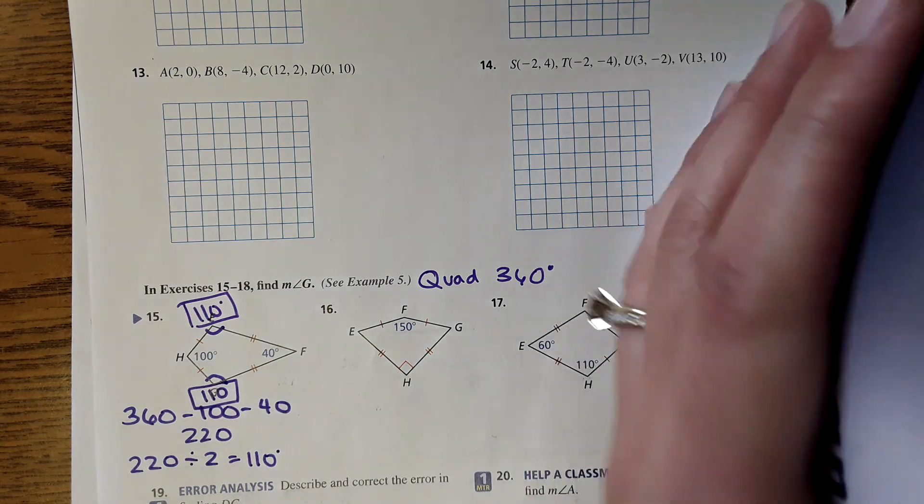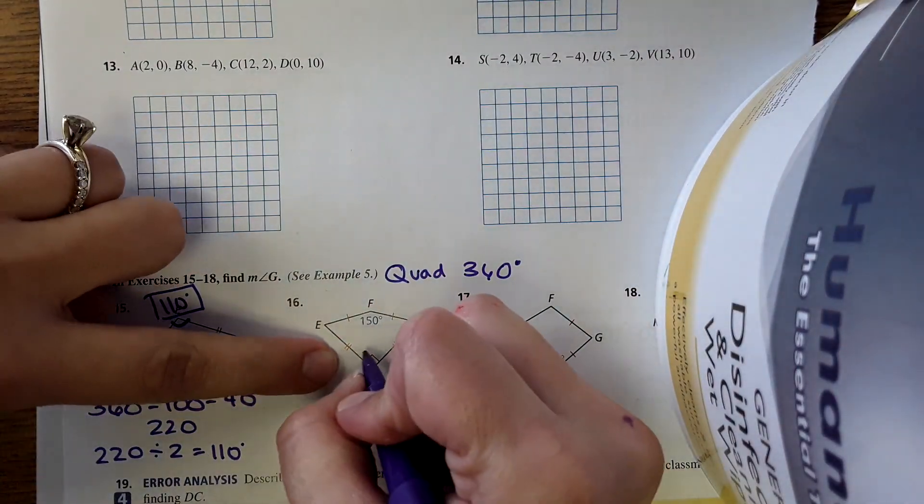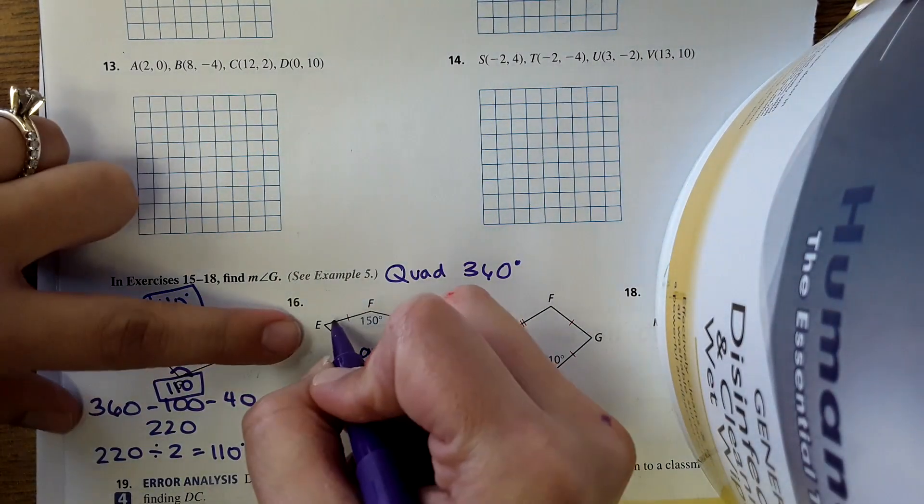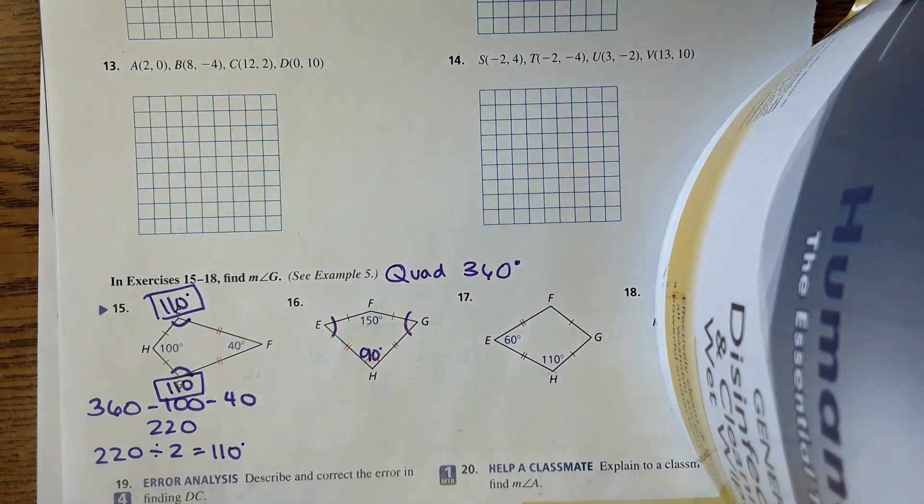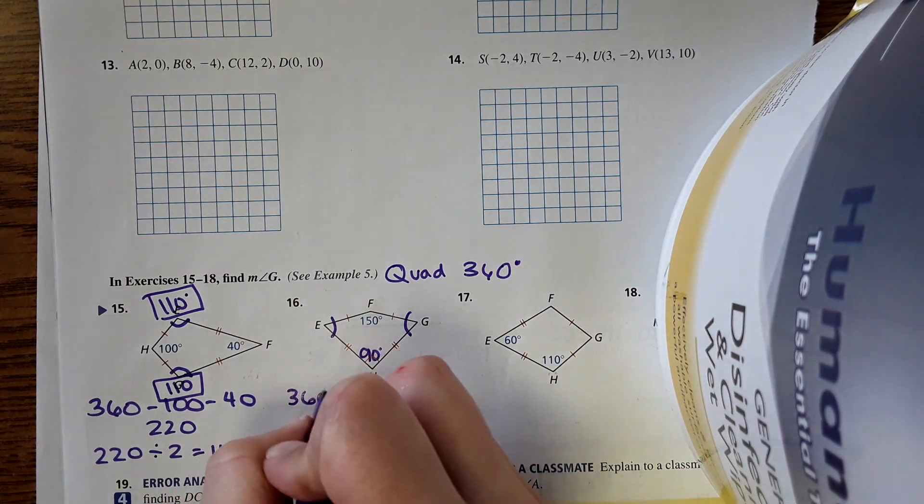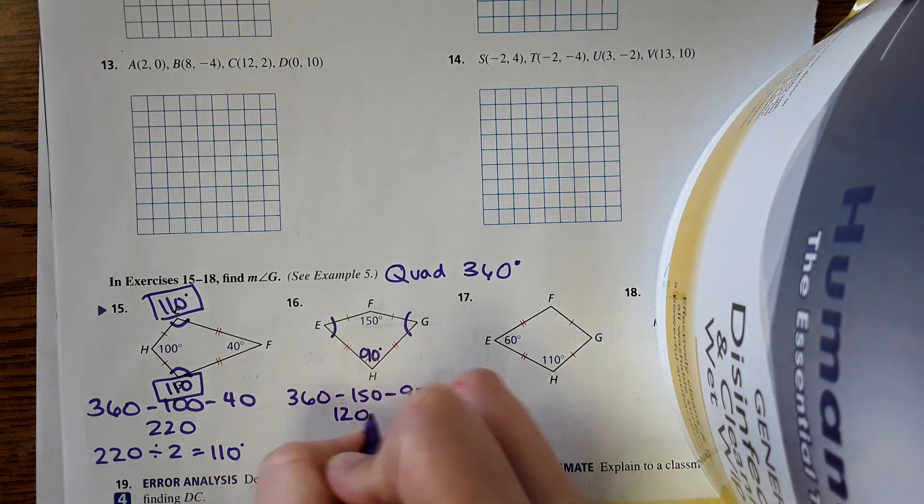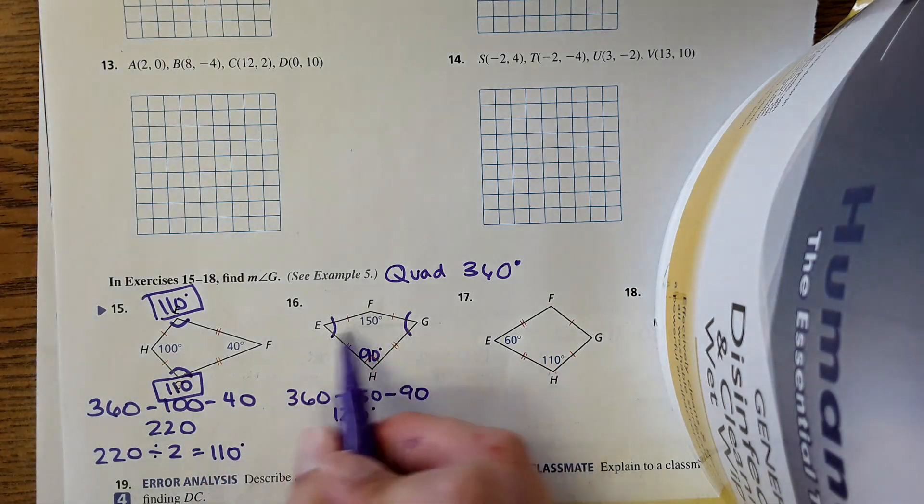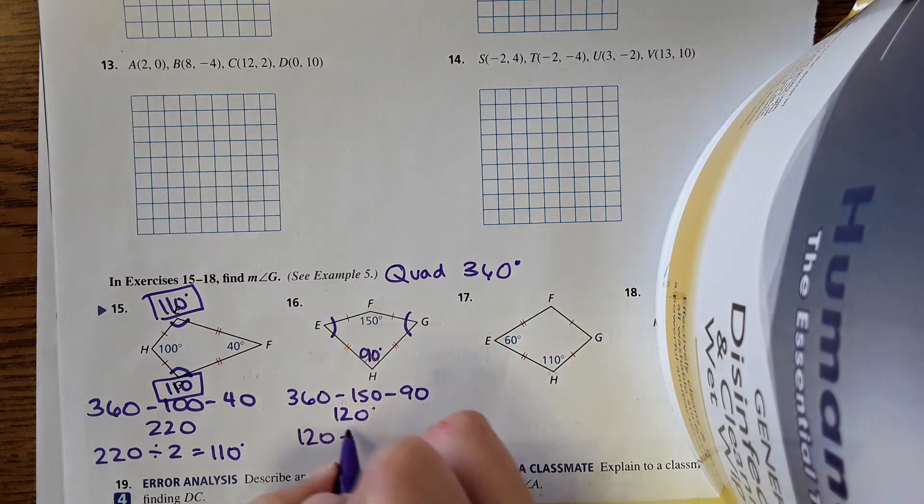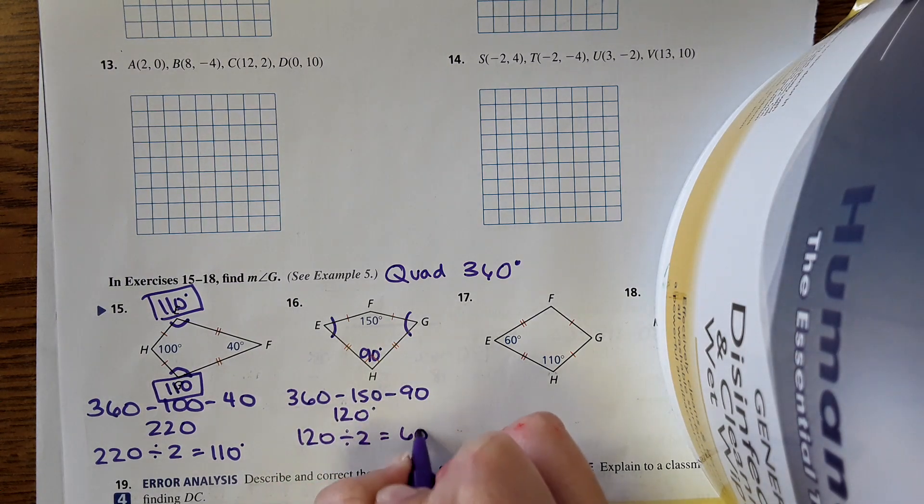Okay, 16, same type of problem. This time they gave us a little square, that means 90 degrees here, and then these two angles are going to be equal. So we'll take 360, subtract 150 and 90. 120 degrees, and then that needs to be divided evenly among those two angles, so divide by 2 and get 60 degrees.